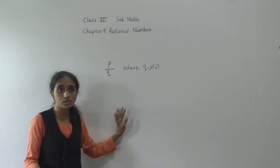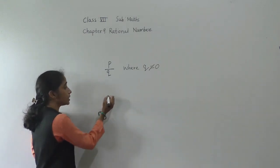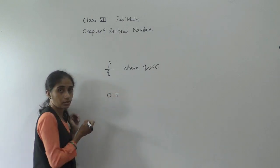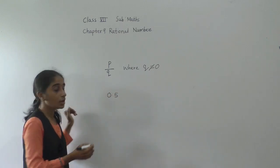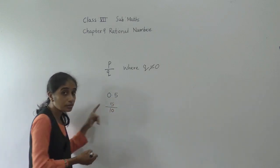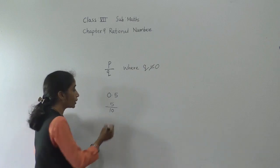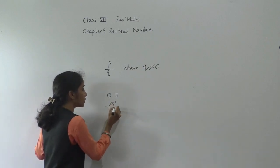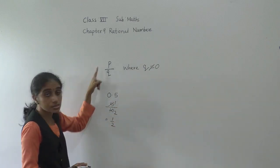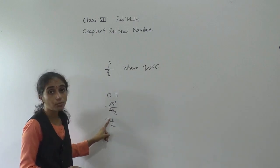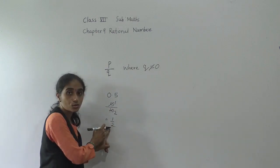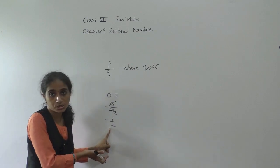Now you will ask: madam, how about decimal numbers? Suppose we take 0.5. Now write this number in the form of a fraction: 5 over 10 simplifies — 5 ones are 5, 5 twos are 10 — so we get 1 upon 2. It is written in the form of P upon Q where Q is not equal to 0, so this is also a rational number.